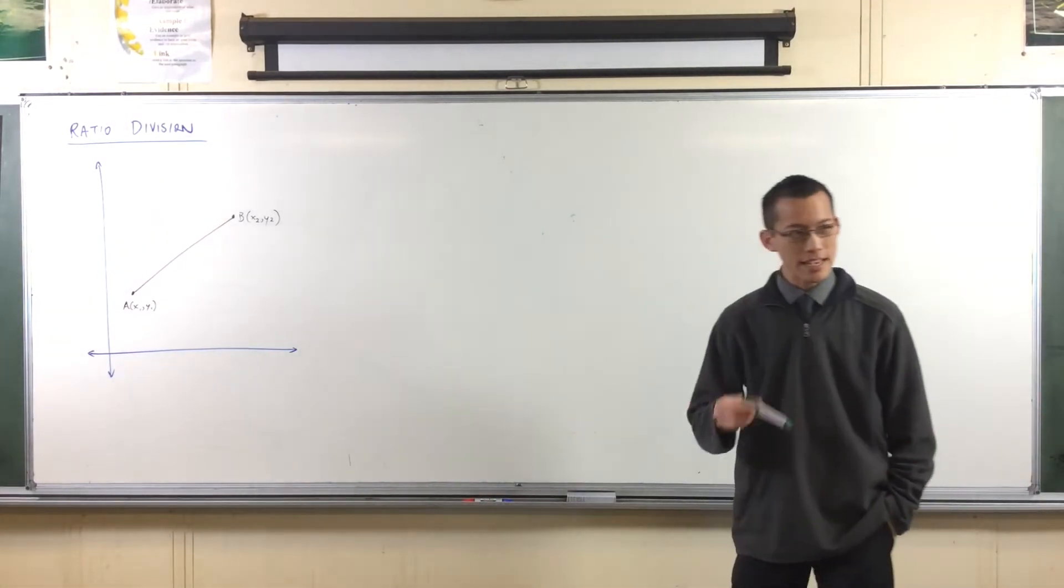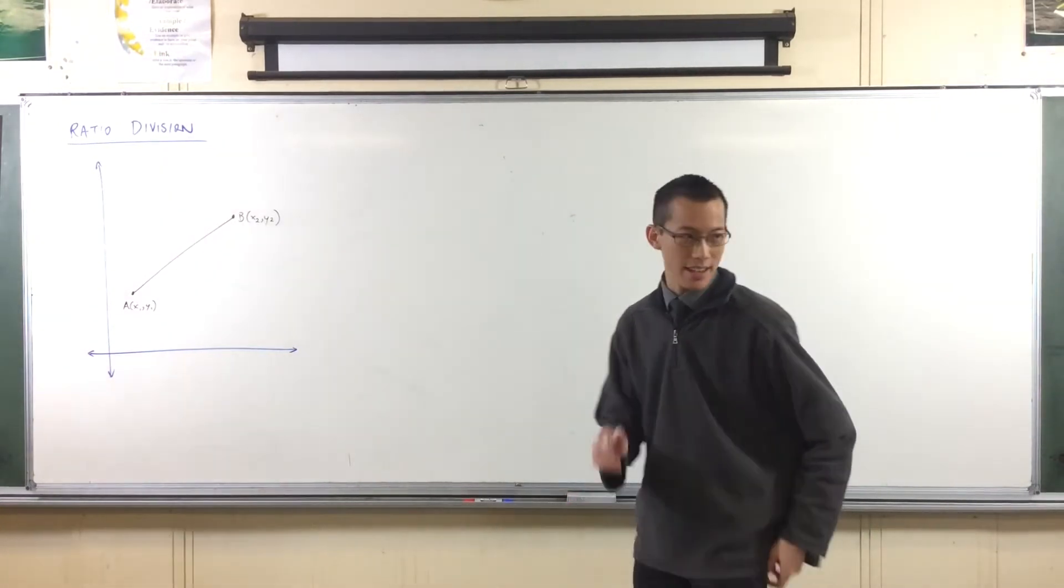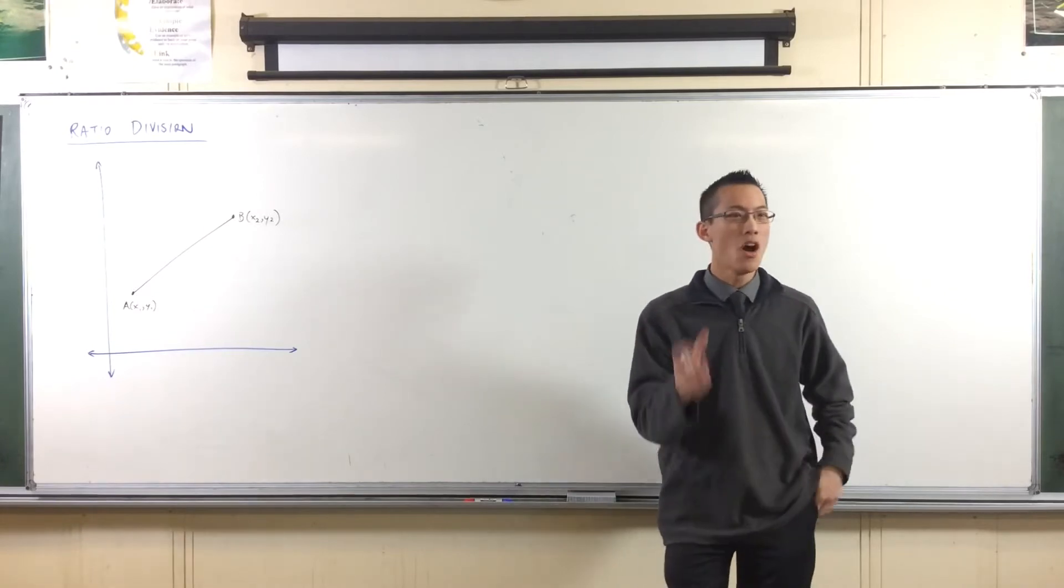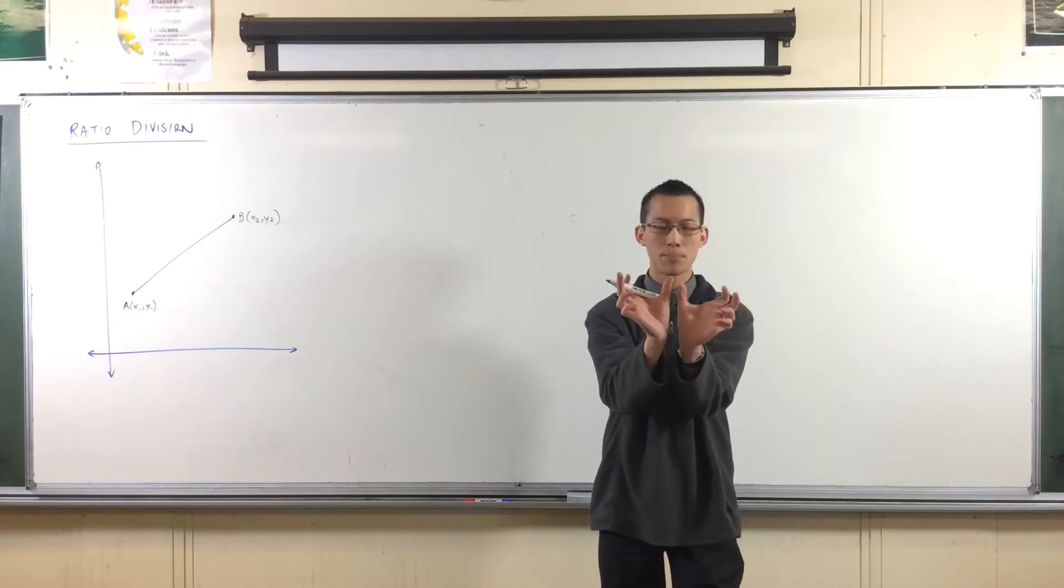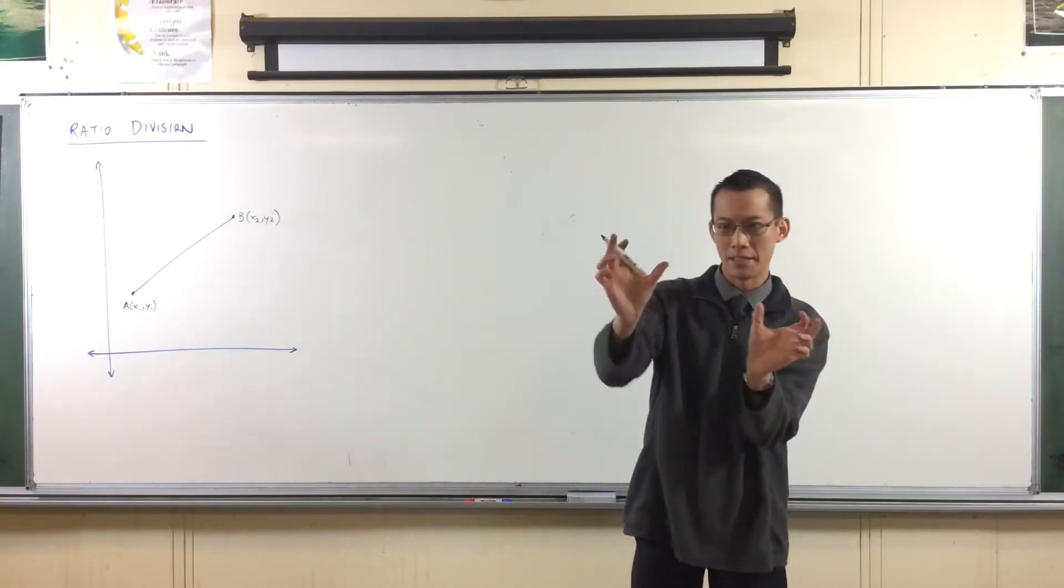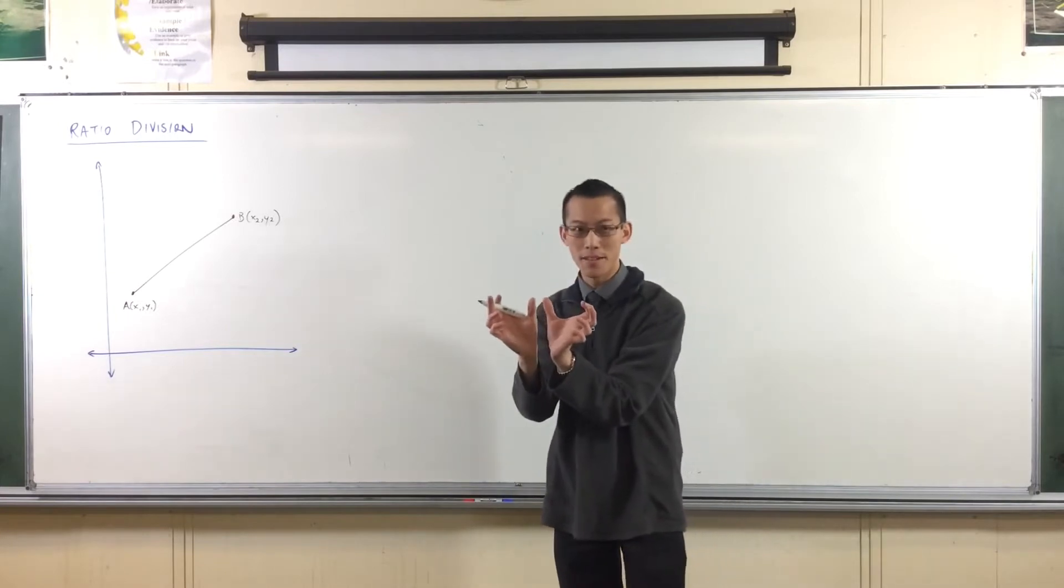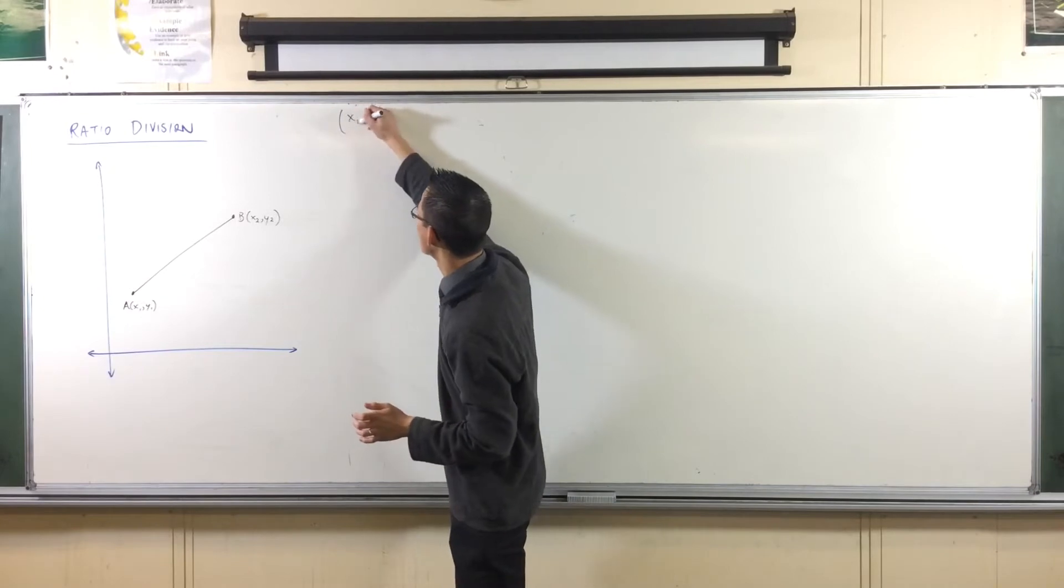Now, something that students often forget is that you actually already know a ratio division formula. It's for a very particular ratio that's very common. Namely, one-to-one. If you divide something in the ratio one-to-one, you're splitting something in half so that one piece is exactly the same as the other. That ratio division formula, one-to-one, more commonly known as the midpoint formula. Which looks like this.